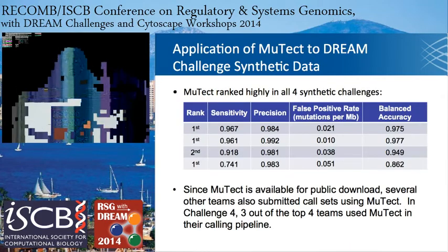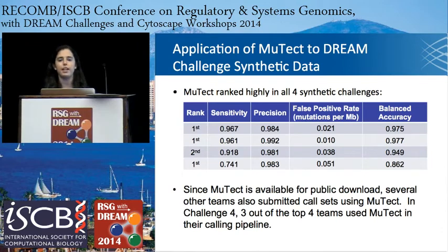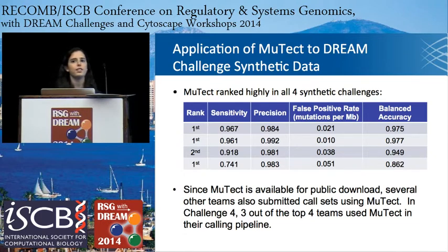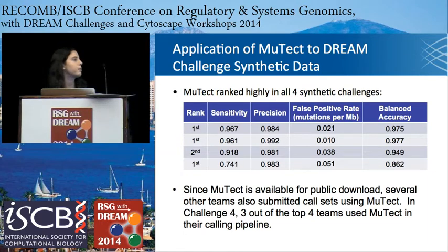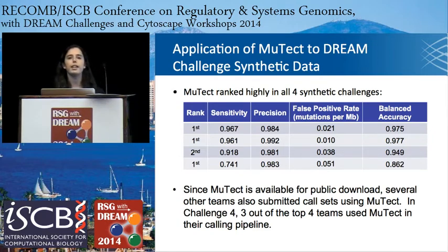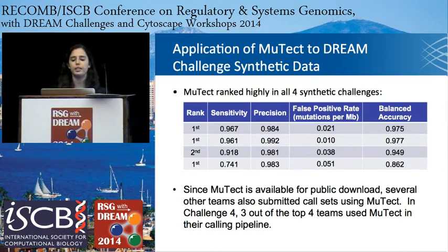That takes me to the application of MuTect to the Dream Challenge synthetic data. I also want to point out that there are many great algorithms that were submitted — they had to extend the number of decimal places for evaluation of callers out to the thousandth decimal place because all the callers were identical if scored to the tenths or hundredths. We did rank first in three of the challenges and second in one synthetic challenge, with a balanced accuracy of around 95%. Since MuTect is available for public download, many other teams actually tried using our caller as well — in Challenge 4, three of the top four teams used MuTect in their calling pipeline.